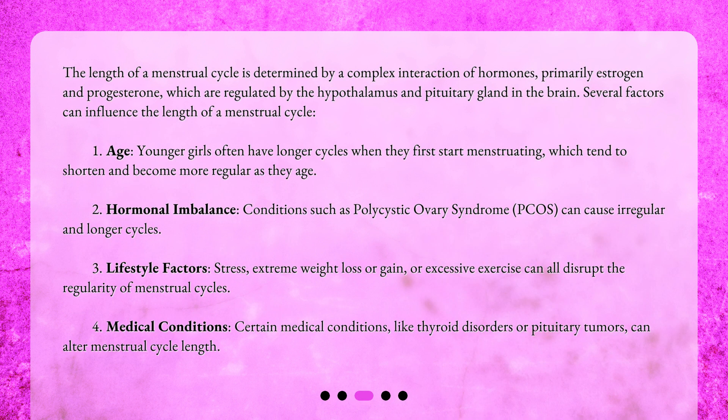What factors influence menstrual cycle length? The length of a menstrual cycle is determined by a complex interaction of hormones, primarily estrogen and progesterone, which are regulated by the hypothalamus and pituitary gland in the brain. Several factors can influence cycle length. One: age — younger girls often have longer cycles when they first start menstruating, which tend to shorten and become more regular as they age. Two: hormonal imbalance — conditions such as polycystic ovary syndrome (PCOS) can cause irregular and longer cycles.